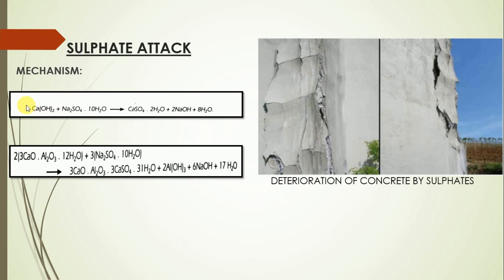In the second chemical reaction, sulphate ions combine with tricalcium aluminate, resulting in the formation of calcium sulpho-aluminate. The reaction products — gypsum and calcium sulpho-aluminate — have a greater volume than the compounds they replace, causing an increase in volume.